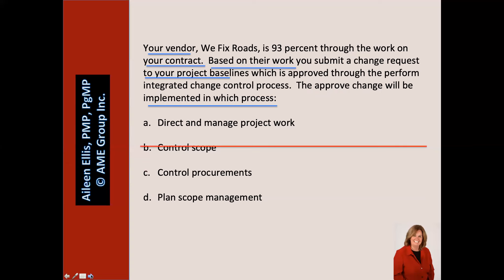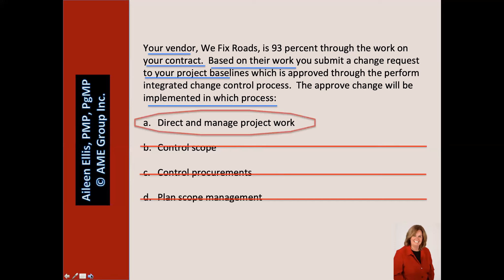In this question, the right answer is not Control Scope, not Control Procurements, and not Plan Scope Management. In this case, the right answer is Direct and Manage Project Work, because the approved change is related to the project. We know this because it says it's a change request to your project baselines. Therefore, change requests that are approved get implemented in Direct and Manage Project Work if they're related to the project, and in Control Procurements if they're related to the contract.